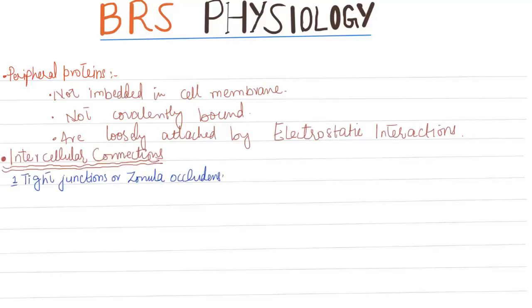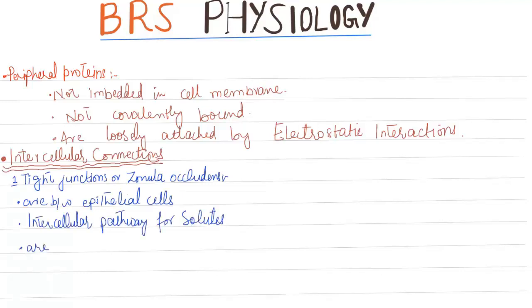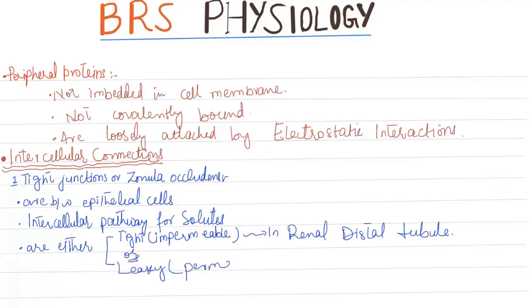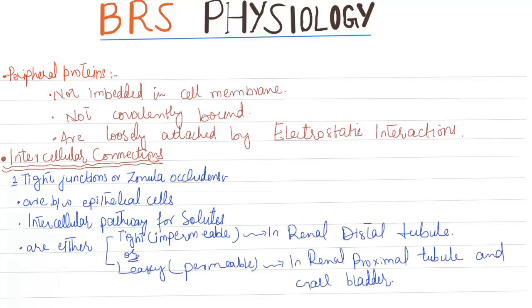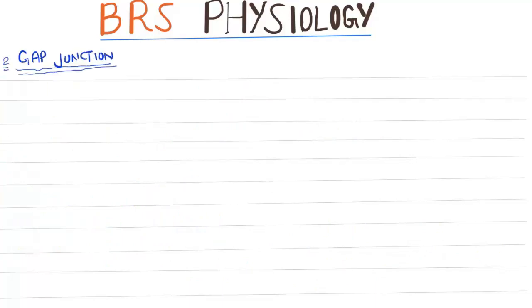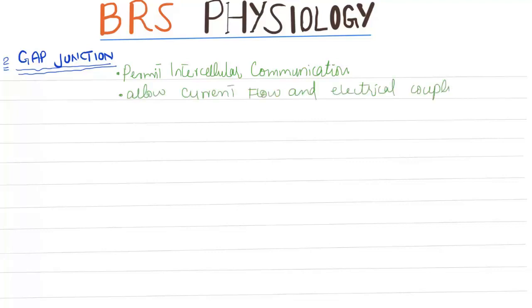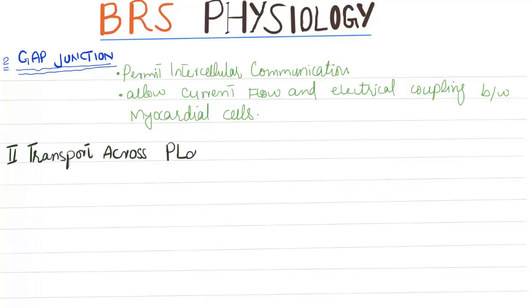Intercellular connections: tight junctions, or zonula occludens, are between epithelial cells. The intercellular pathway for solutes can be either tight or impermeable, or leaky or permeable. Tight or impermeable in the renal distal tubule, and leaky in the renal proximal tubule and gallbladder. Gap junctions permit intercellular communications, for example allowing current flow and electrical coupling between myocardial cells.